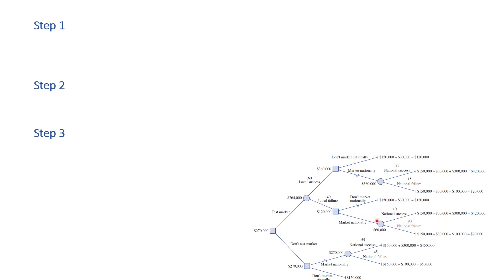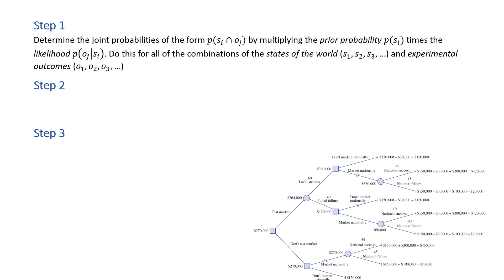Step one: determine the joint probabilities of the form P(state i and experimental outcome j). For example, P(national success and local success), P(national success and local failure), P(national failure and local success). We calculate these by multiplying prior probabilities by likelihoods — P(oj given si) times P(si) gives us the joint probability of oj and si — and we do that for all combinations of states and experimental outcomes.